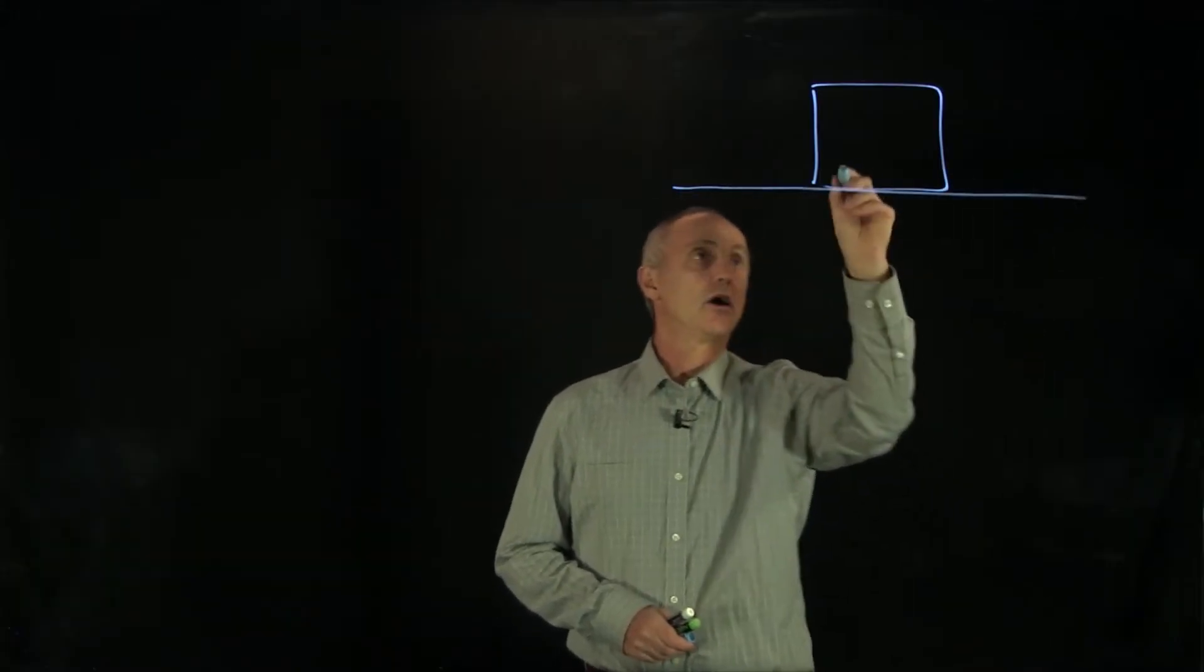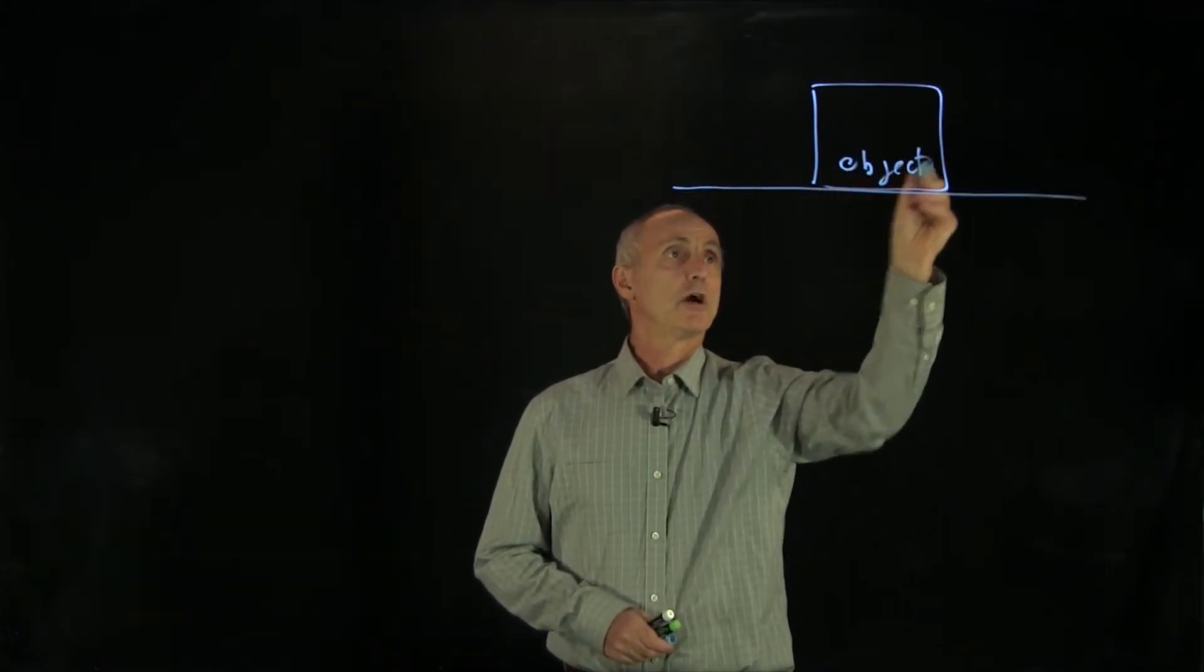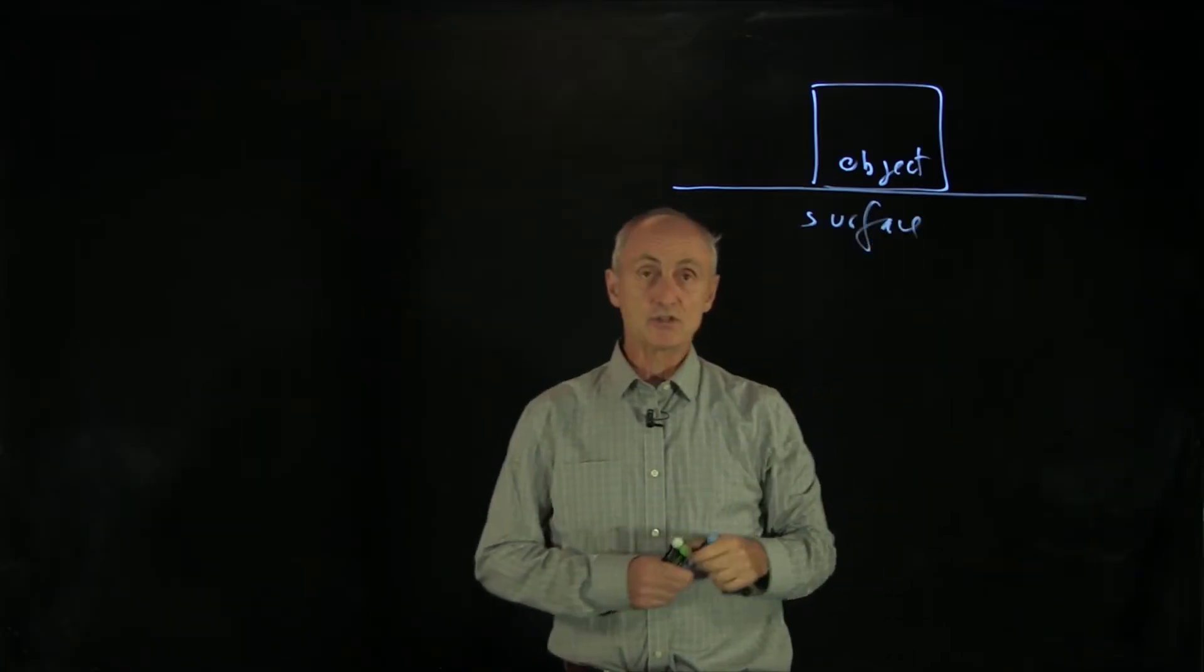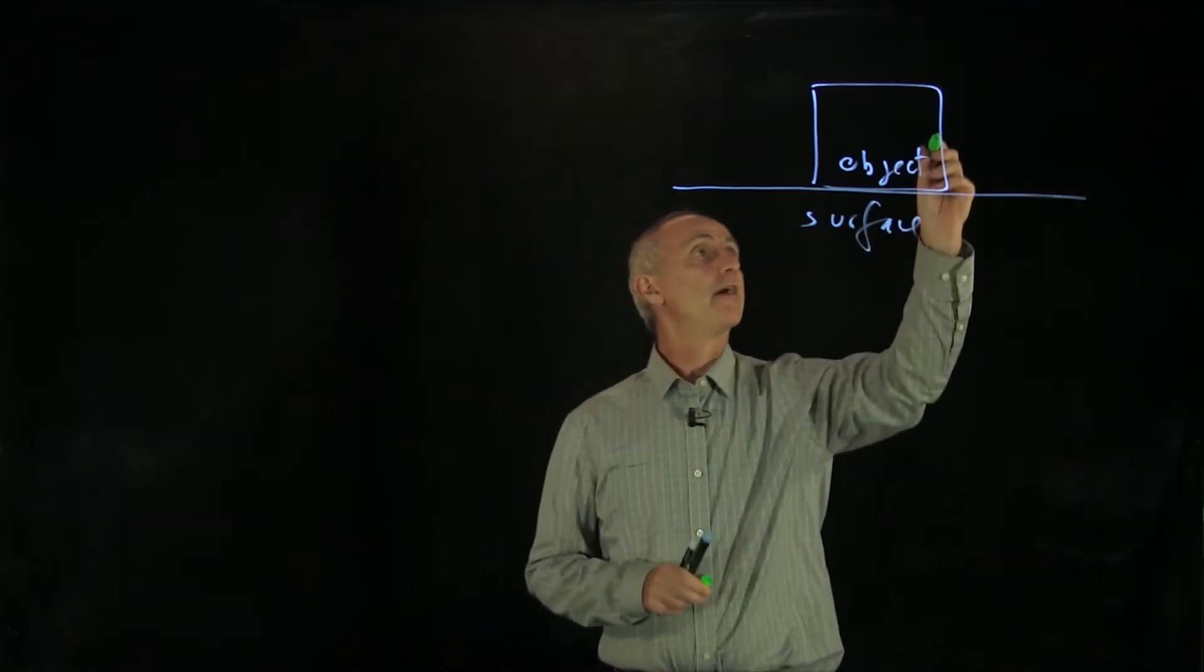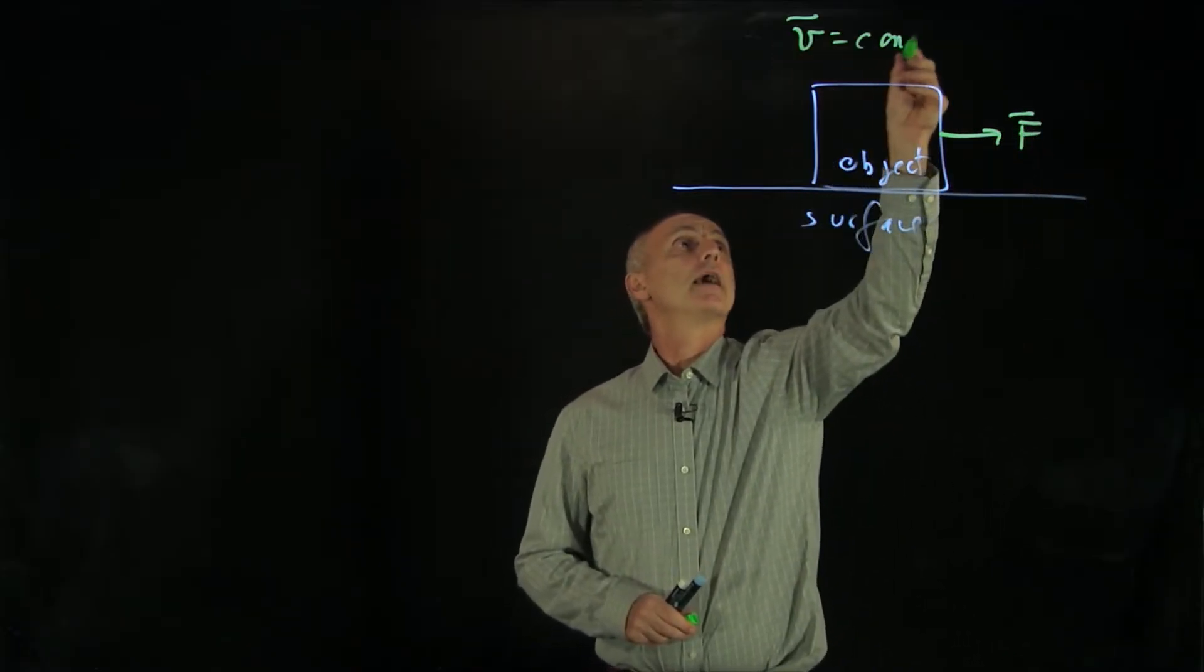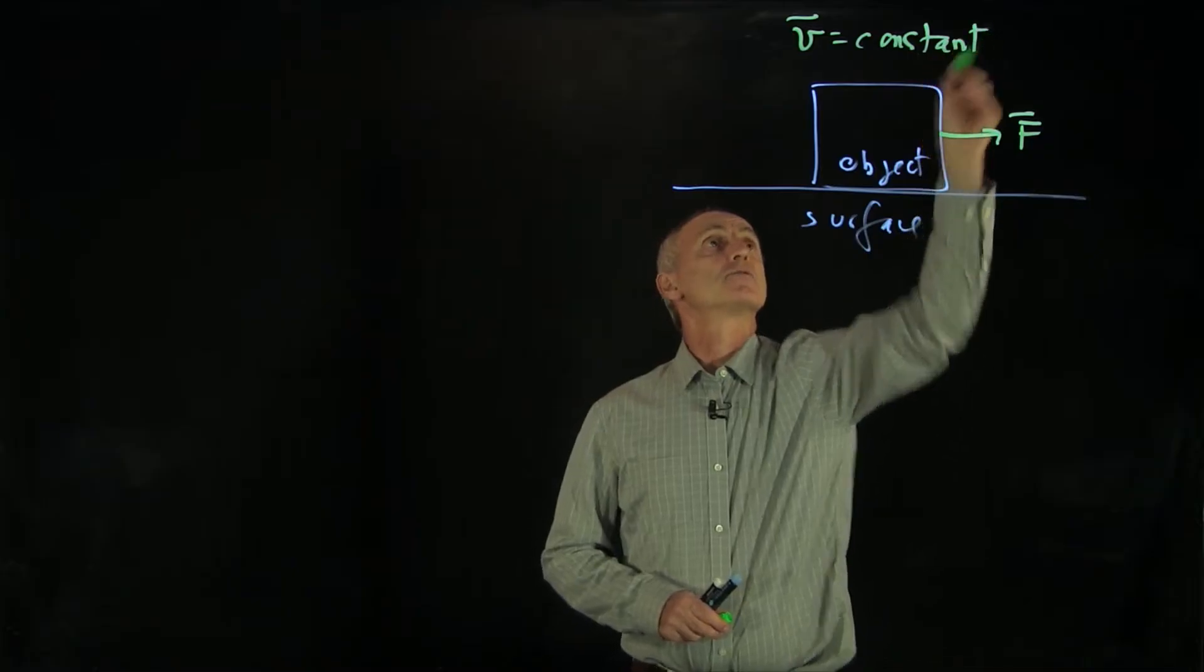Let's consider what happens when we have an object that's moving on a horizontal surface. So here's our object, and here's our surface. Now we want to look at a special case where we're applying a force F to the object, and the object is moving at a constant speed.